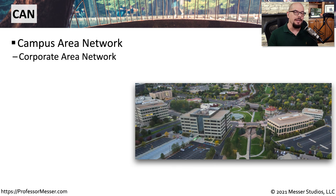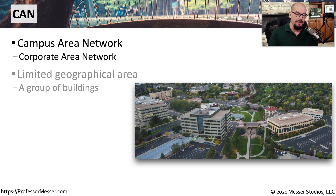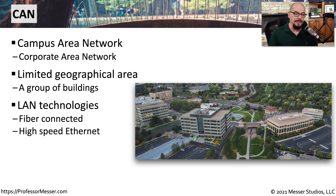There's a middle ground between a local area network in a building and a metropolitan area network — the campus area network, or CAN. This covers multiple buildings within a local area on a single campus, as seen with schools, universities, and large organizations spanning multiple buildings. It's very common to have these buildings connected with conduit, making it easy to pull fiber from one building to another. We would run local area network technology — high-speed Ethernet — between all of these buildings so users communicate as if in the same building.